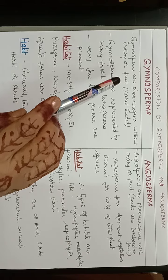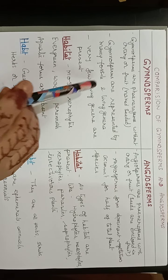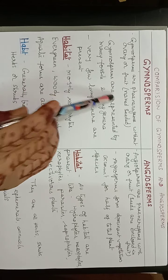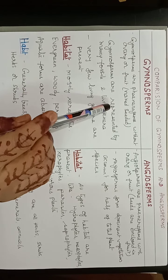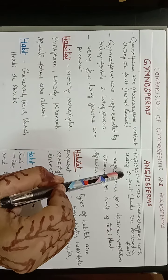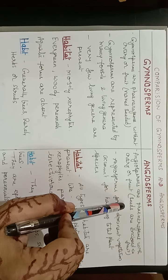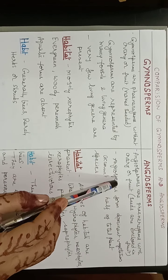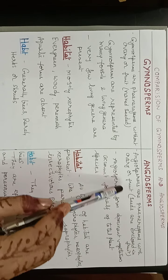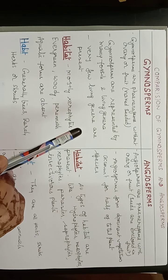To start with, in gymnosperms: gymnosperms are phanerogams without ovary, that means these are naked seeded plants. Angiosperms also belong to phanerogams but they produce fruit — that is they have an ovary and seeds are enclosed within the fruit.